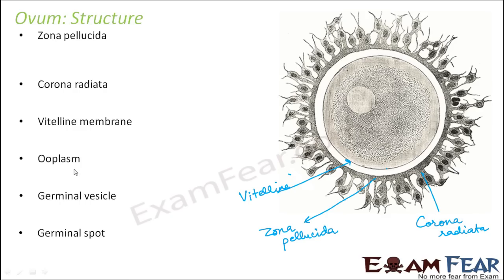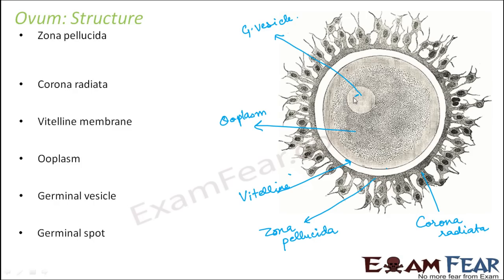Ooplasm is nothing but the cytoplasm of the ovum — since it is related to the ovum, it is given this name. Germinal vesicle is nothing but the nucleus of the ovum. Germinal spot is nothing but the nucleolus — the dense portion present inside the nucleus.